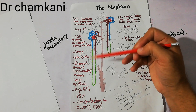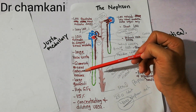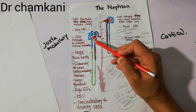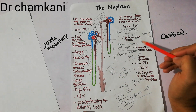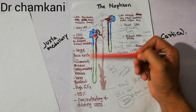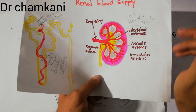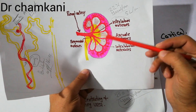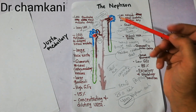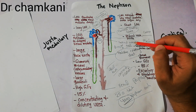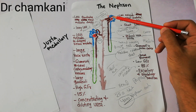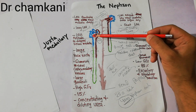The glomeruli of the juxtamedullary nephron are present near the corticomedullary border — the border between the cortex and the medulla. The glomeruli of the juxtamedullary nephrons are present somewhere around that border of the cortex and medulla. The glomeruli of the cortical nephrons, on the other hand, are present in the outer cortex.